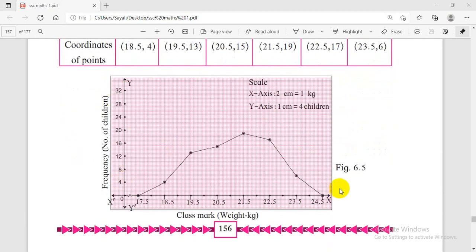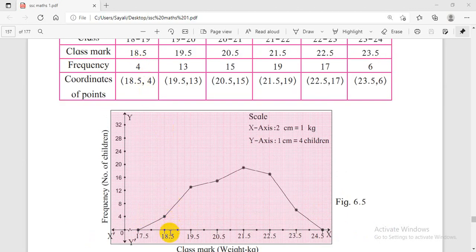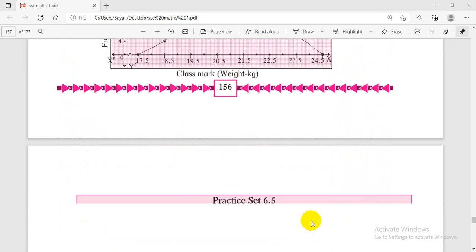If we mark these points, we can plot them. The points range from 17.5 to 24.5 based on the class intervals. I hope you understood this.